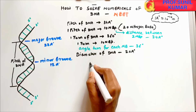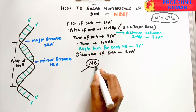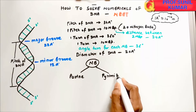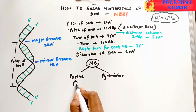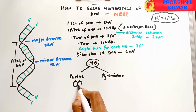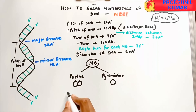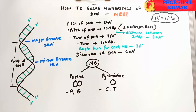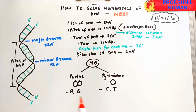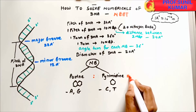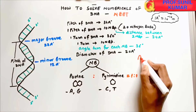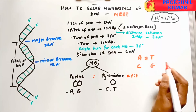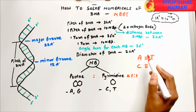There are two types of nitrogen bases: purines and pyrimidines. Purines are double-ring structures — adenine and guanine. Pyrimidines are single-ring structures — cytosine and thymine. The purine to pyrimidine ratio is always 1:1. Adenine pairs with thymine via double hydrogen bonds, and cytosine pairs with guanine via triple hydrogen bonds.